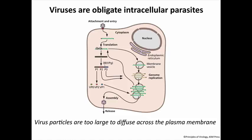Viruses, as you know, are obligate intracellular parasites. They have to get inside of a cell — there's no way around it. If they don't get inside of a cell, they will not replicate. First thing that has to happen is attachment to a cell surface receptor and entry of the virus into the cell. Viruses are too big to just diffuse through the membrane, so they have to use transport pathways that exist in the cell. Today we'll focus on attachment and then how the genome is brought into the cell.